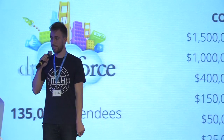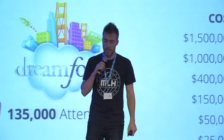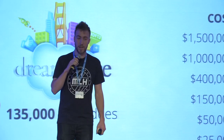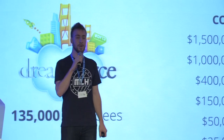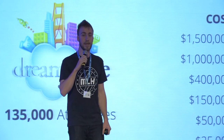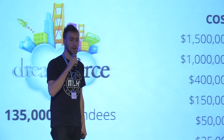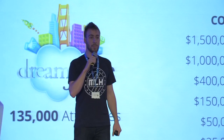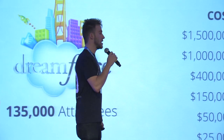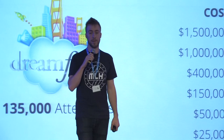Let's look at some examples. Dreamforce: each year, 135,000 people participate. The headline sponsorship costs $1.5 million — that's about $11 per person who attends. As you go down in tier, it gets cheaper, but theoretically the branding shrinks, so your exposure to the people attending goes down. You have to find the point in this function that maximizes the value you're getting for each dollar you spend per attendee.